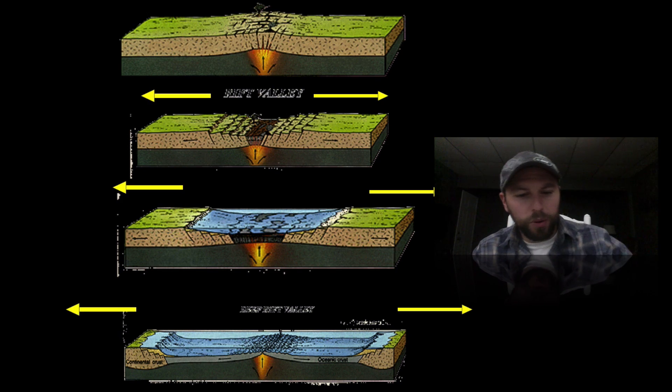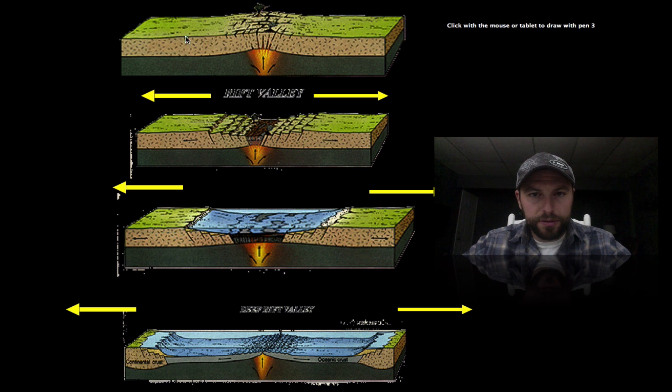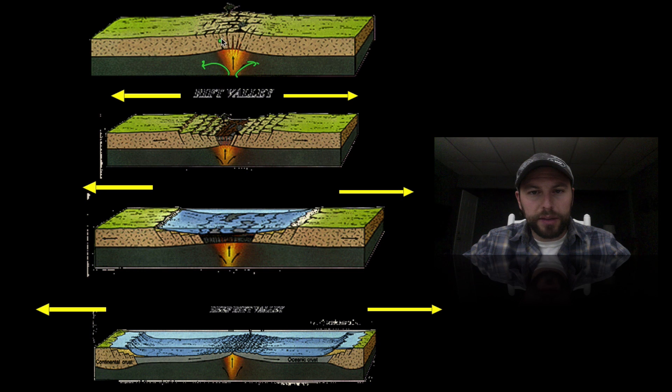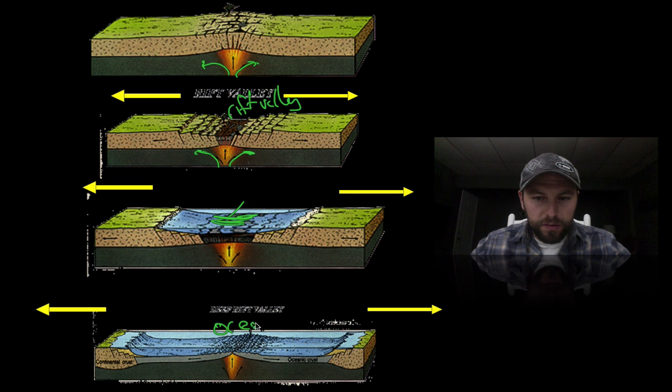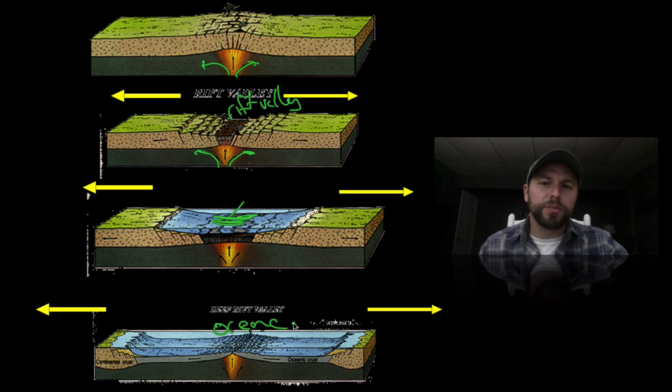Here's an example where we have a divergent plate boundary. We can see the asthenosphere currents pulling this land apart and notice we get these little steps down, these are like a rift valley. As this moves apart more and more, water will come in and fill the area and eventually we get oceans to form. This is a divergent plate boundary underneath a landmass.